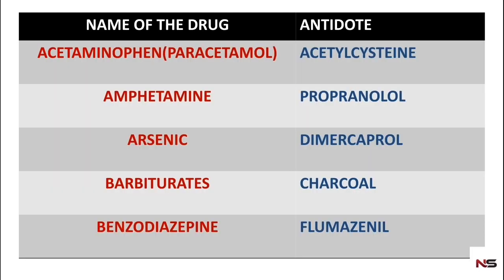Next we will see the drugs — in the first column the name of the drug, and in the second column the antidote used for the poisoning of that drug. First, acetaminophen (paracetamol): the antidote for paracetamol poisoning is acetylcysteine.